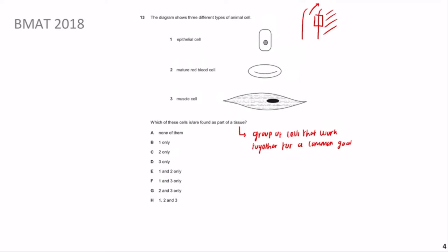Epithelial cells line the airways - there will be many epithelial cells along this track, so you have a group of cells. They work together to provide a barrier function, preventing infection. So epithelial cells are definitely part of a tissue. For matured red blood cells, a common point of confusion: cells in a tissue don't necessarily have to be connected. Red blood cells float separately in blood but they're still a group of cells with a common goal of delivering oxygen to peripheral tissues.